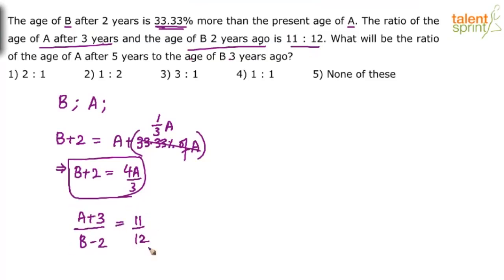So I think two equations, two unknowns we can solve. Solve for these two values and then get the required answer. So let us solve for it. First of all, let us cross multiply this. So what do we get? We get 12A plus 36 equals to 11B minus 22. Now let us substitute. See from this we can say that B is equal to 4A by 3 minus 2. So substitute that here.